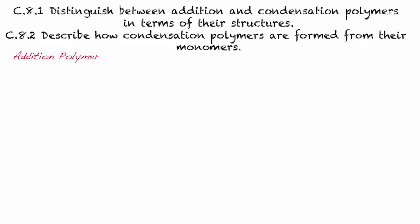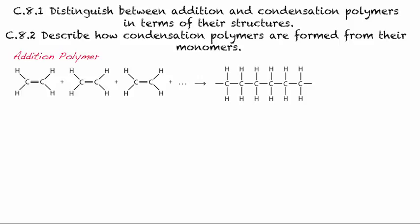First, let's take a look at addition polymers again. That's part of the core. You're taking monomers that have a carbon-carbon double bond and reacting them together, where the double bond is lost and used to help link up the different monomers, and you end up with a saturated product.